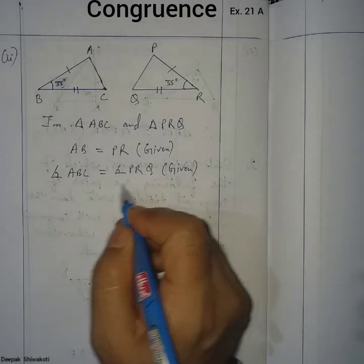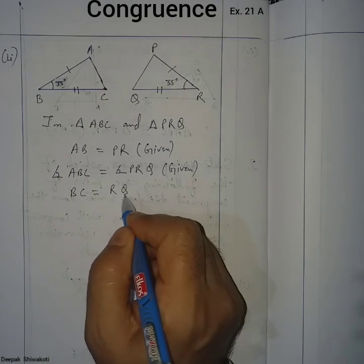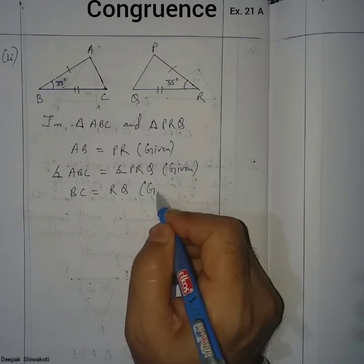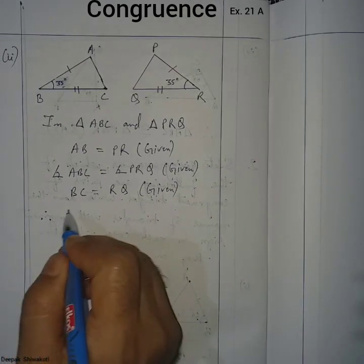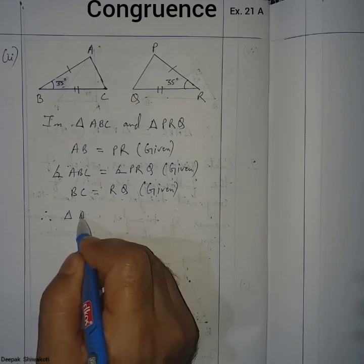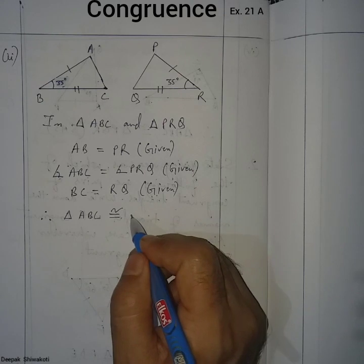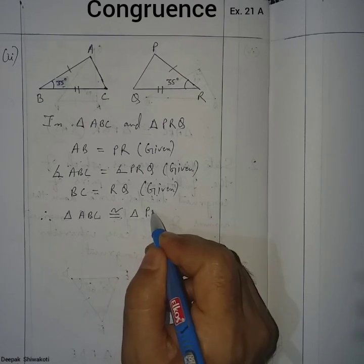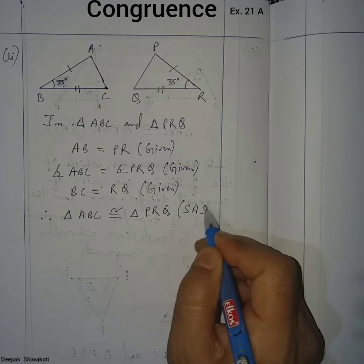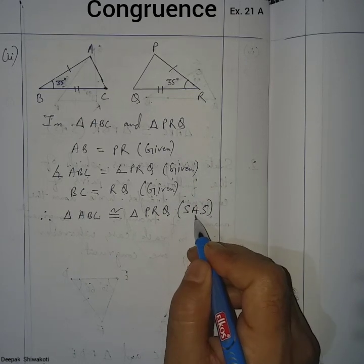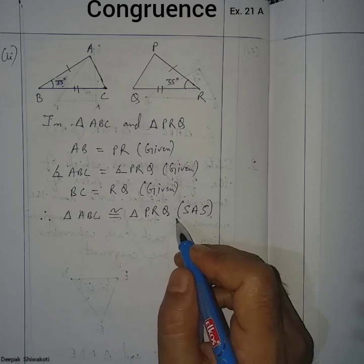Side BC is equal to RQ, also given in the figure. Therefore triangle ABC is congruent to triangle PRQ by the SAS (Side-Angle-Side) condition.